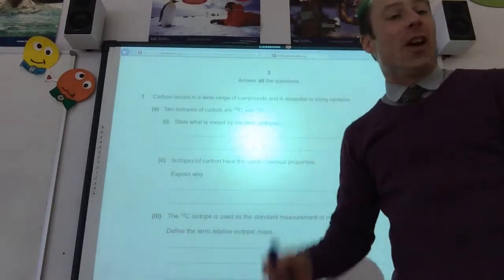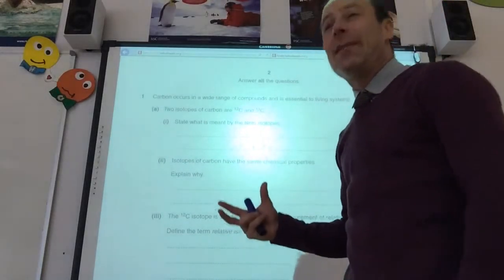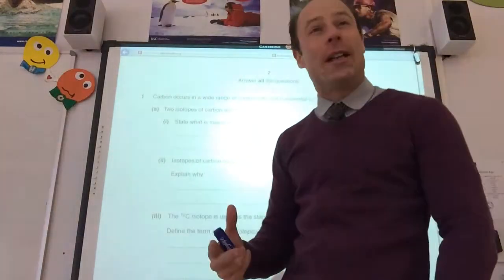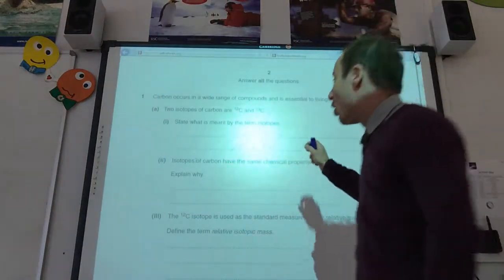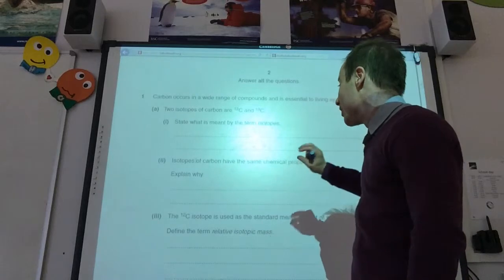Nice definition. Obviously, straight away, it's going to be atoms of the same elements. They have the same atomic number, but a different number of neutrons is key for that. So same number of protons, different number of neutrons.